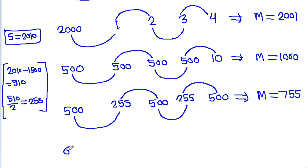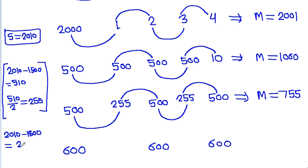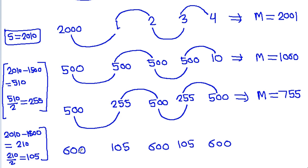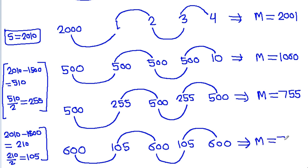Suppose a is 600, c is 600, and e is 600; then 2010 minus 1800 is 210, and 210 divided by 2 is 105. So suppose b is 105 and d is 105, then a plus b is 705, b plus c is 705, c plus d is 705, and d plus e is 705. In this case, m will be equal to 705.